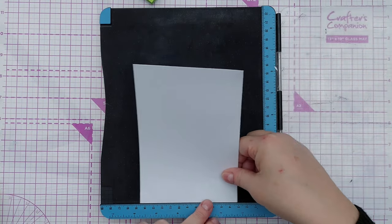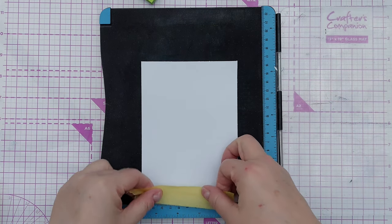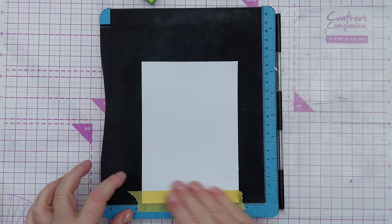To start the ball rolling I'm going to do some stamping on this piece of smooth white cardstock and this is going to be the panel on the front of my card.